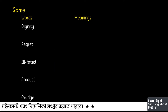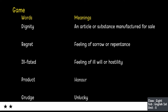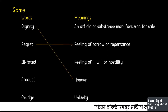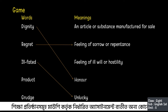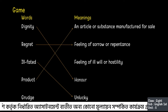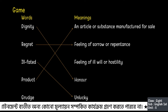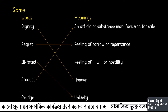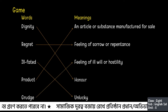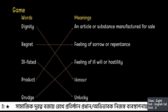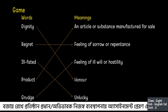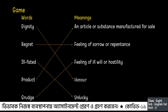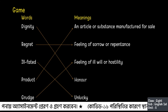More words: dignity, regret, ill-fated, product, and grudge. And these are the meanings. Dignity — the answer will be honor. Regret — feeling of sorrow or repentance. Ill-fated — unlucky. Product — an article or substance manufactured for sale. And the last one, grudge — feeling of ill-will or hostility. It was a fun game! I'm sure through this game the meanings of the words from the text have become clear to you.